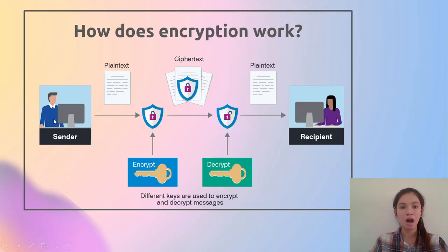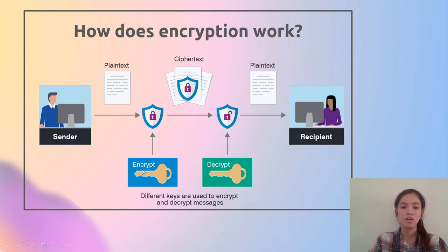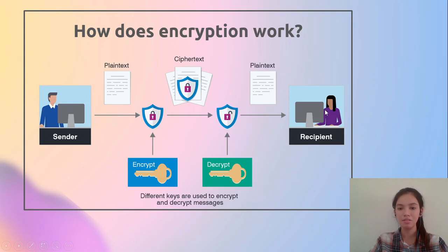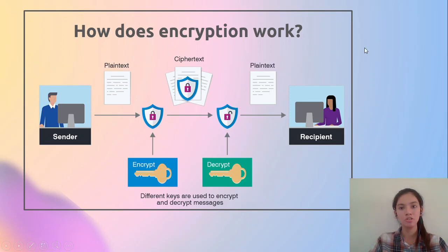Let's see in layman terms how encryption works. Here we have a sender and a recipient. The sender wants to send plain text to the recipient but wants to ensure its security and that it is not modified in any manner. There are different keys used to encrypt and decrypt messages. The encryption key is applied to the plain text which converts it to ciphertext. This ciphertext is then sent from the sender to the recipient. The ciphertext is decrypted using the decryption keys and the original plain text is obtained, ensuring security.